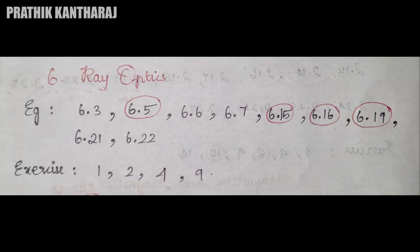Next, it's the 6th chapter. Examples: 6.3, 5, 6, 7, 6.15, 16, 19, 21, and 22. Exercise: 1, 2, 4, 9.